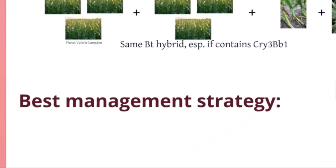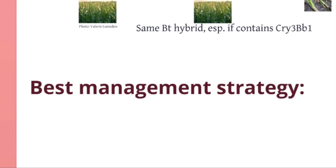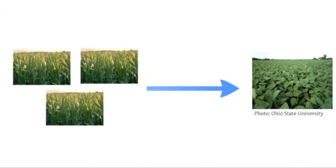What is the best management strategy? Hands down, the best thing to do is to rotate to another crop. As we've talked about, corn rootworms depend on corn roots for survival — they cannot travel far, and they cannot survive long without roots — so eliminating their host will eliminate corn rootworms. A single year of crop rotation to a crop other than corn will decrease their populations, but obviously the more diverse the rotation, the better.